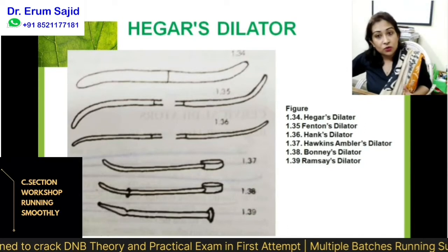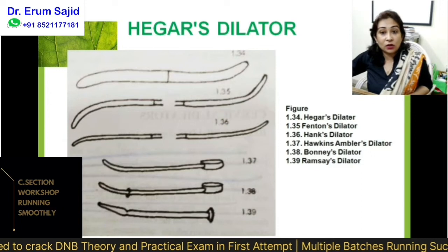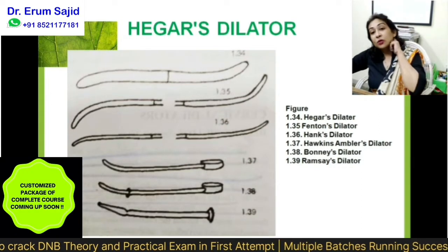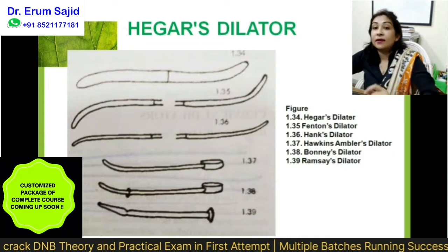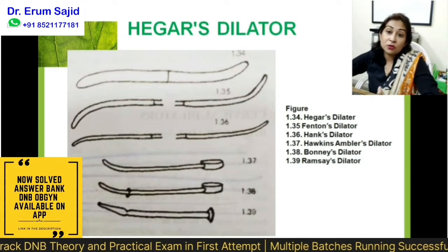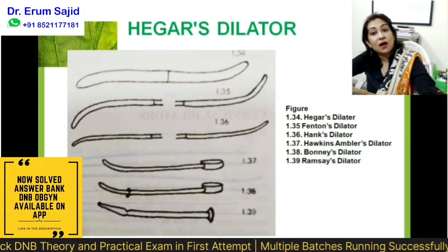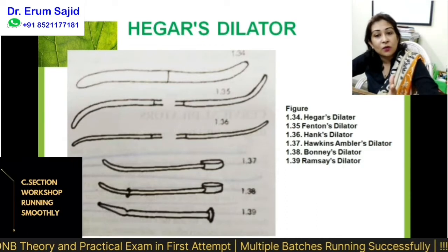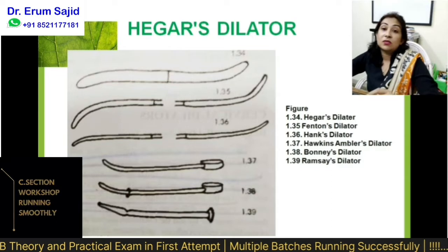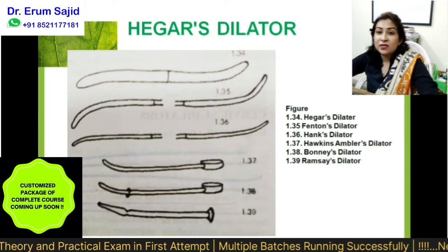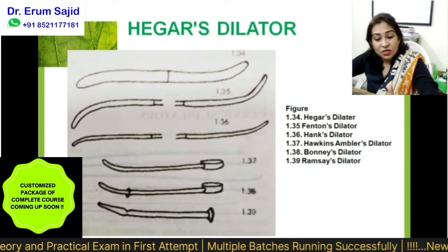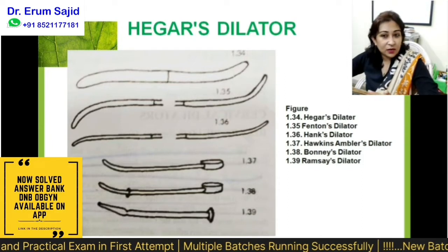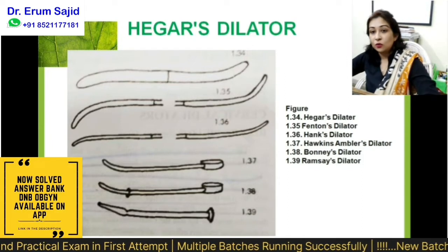A very good instrument to choose on the table if the examiner asks you to pick an instrument — and a very good instrument to give viva on, because not much is going to be asked. Only those indications which you are pretty well versed with, which you have seen happening every day. Very simple questions like complications associated with dilators and so on. Easy questions — let's see how they go.